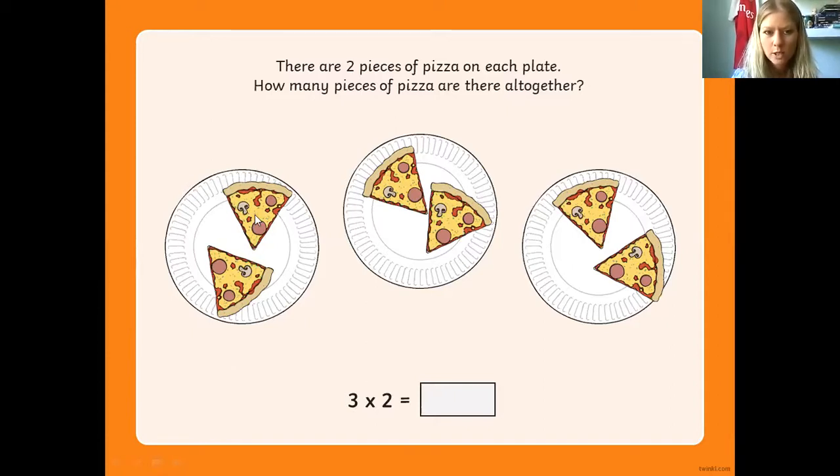We've got one, two, three, four, five, six. So we've got six pieces altogether. Or if we do it as a multiplication, it would be three for our three plates times two equals six.